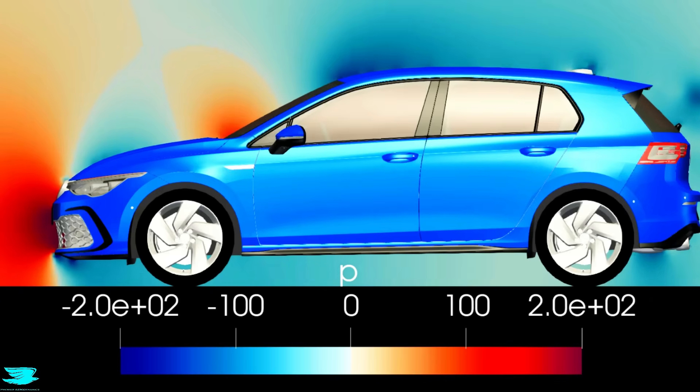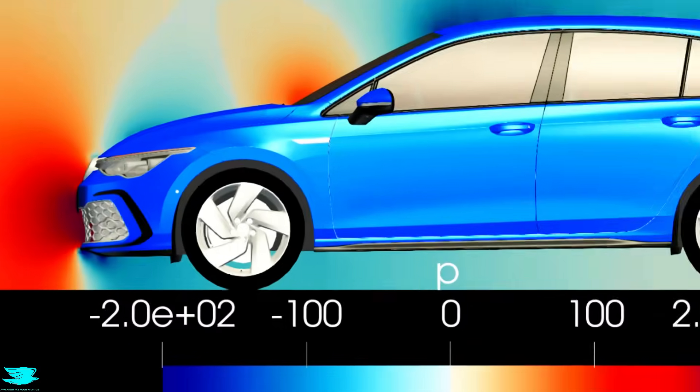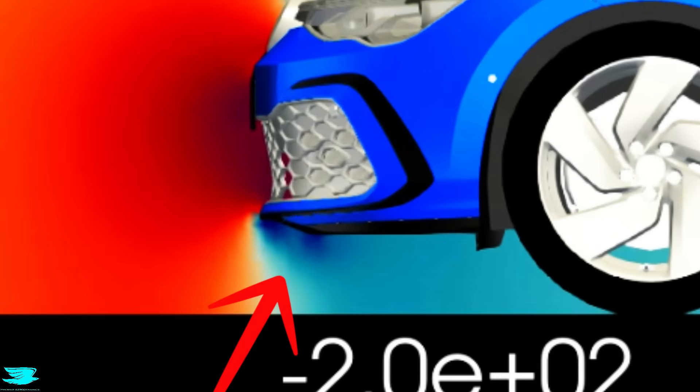And if we look at the same center plane slice, but now colored in the pressure, where blue is negative pressure and red is positive pressure, the underbody here is producing really good low pressure, which then creates downforce and helps pull the car down. That is happening around the front wheels, which is better for this car because it is front wheel drive.